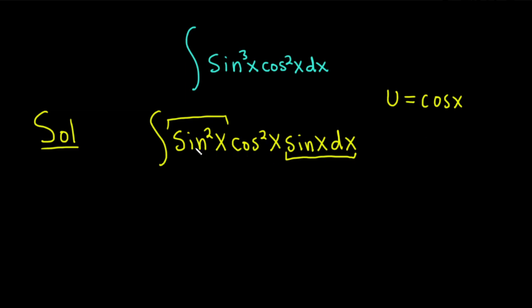So that means that this sine squared needs to go away. So what we can do is we can write this sine squared as 1 minus cosine squared using an identity. And then here we still have cosine squared. And then here we have sine x dx.